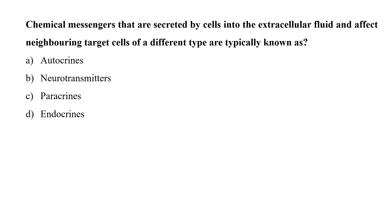Chemical messengers that are secreted by the cells into the extracellular fluid and affect neighboring target cells of a different types are typically known as autocrine, neurotransmitters, paracrine, or endocrines. Hormones are the chemical messengers secreted into the blood or extracellular fluid by one cell that affect the functioning of other cells. So option D is the correct answer that chemical messengers secreted into the extracellular fluid and affect neighboring target cells are basically example of endocrines, which is commonly used for the hormone secreting cells.